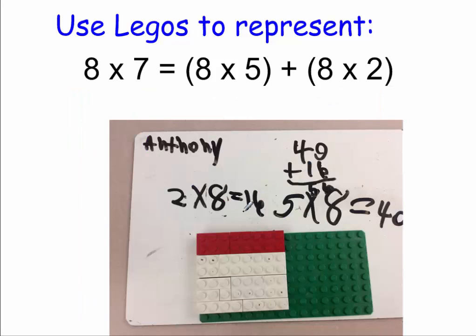So when you look at Anthony, he explains it more, that really the 2 times 8 piece gives him 16, a fact that's easier for him to know, and then the 5 times 8, again using our five facts because those are really easy for us to know, makes 40. And then by adding those, gives you the total area because area is additive. Nice job, Anthony.